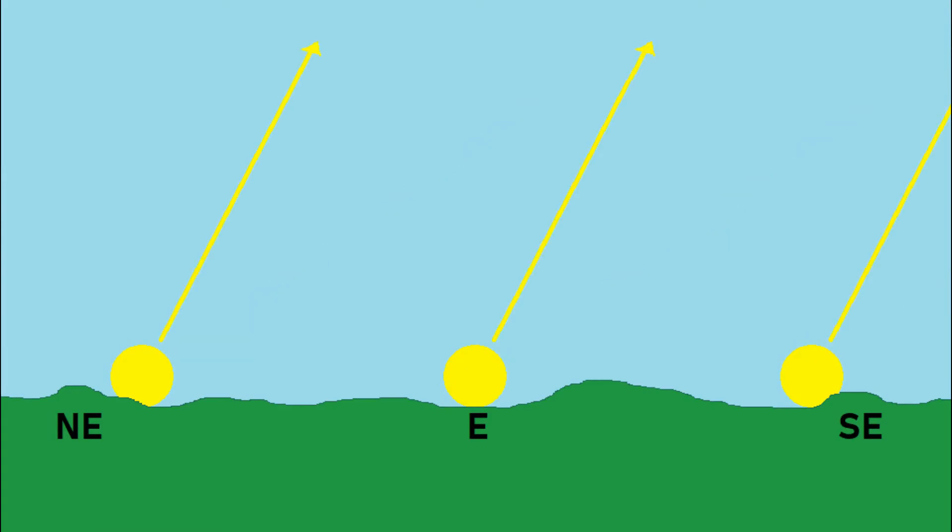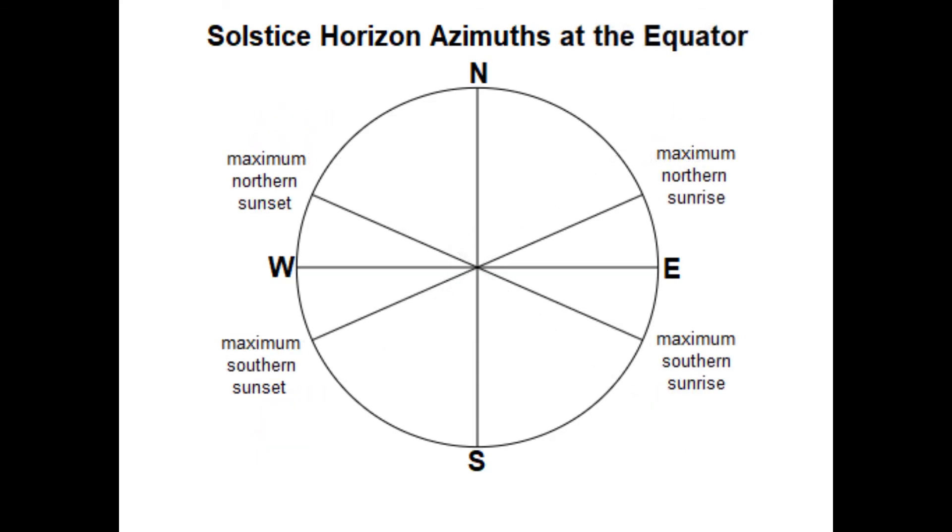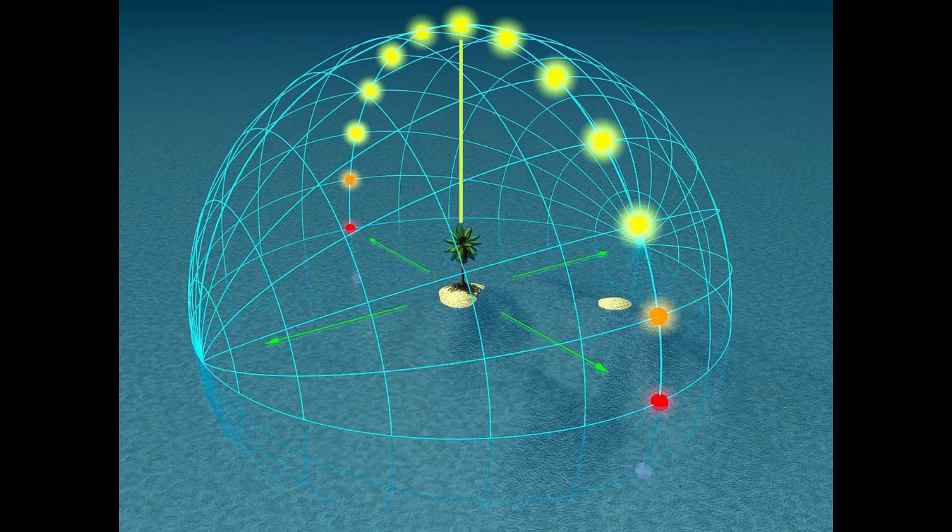Towards the equator, the sun rises at an angle that is more perpendicular to the horizon, and the angle between where it rises at each solstice is not very wide. Near the equator, the sun also passes directly overhead twice each year, as it goes between the northern and southern maximums. When this happens, it is known as a zenith passage.